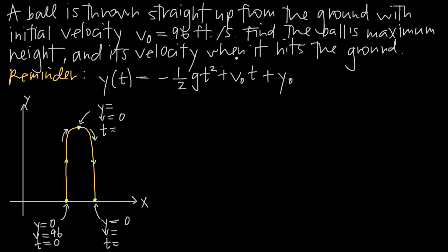We've been asked to find the ball's maximum height, which is its position when it reaches its highest point — the value of y at that point. We've also been asked to find its velocity when it hits the ground. The problem has asked us for those two values in particular, but we may need to find some other unknowns in order to get them.